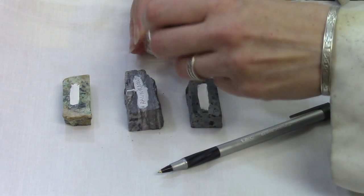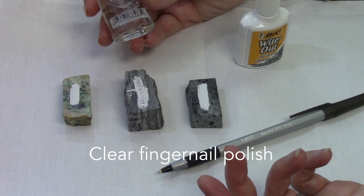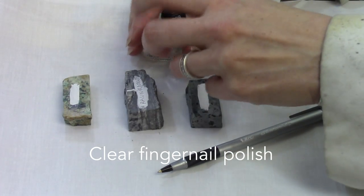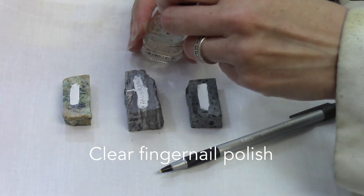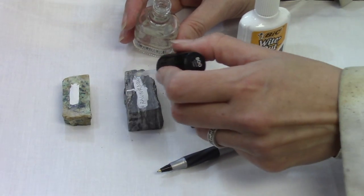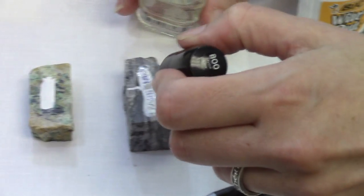This additional step just requires you to take clear fingernail polish or some other finish and put a layer of fingernail polish on top of your label. And again,